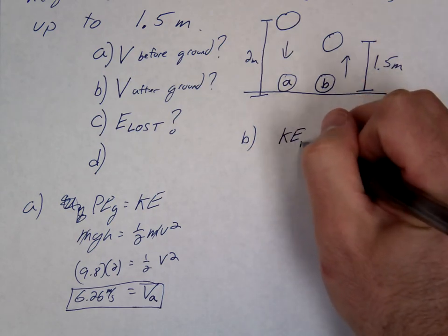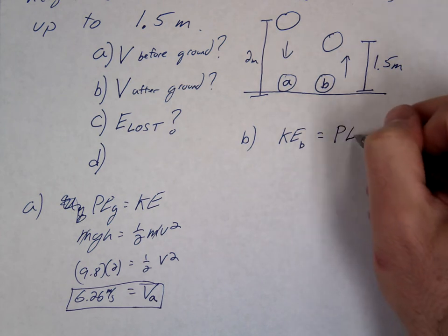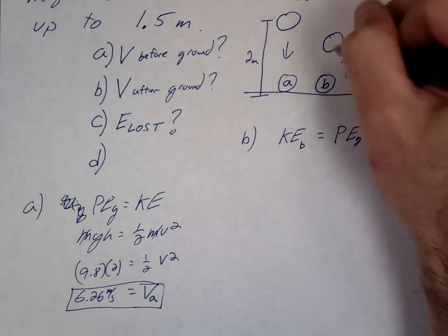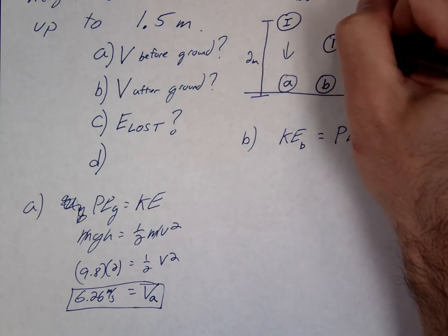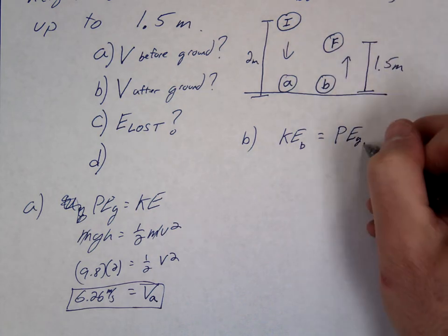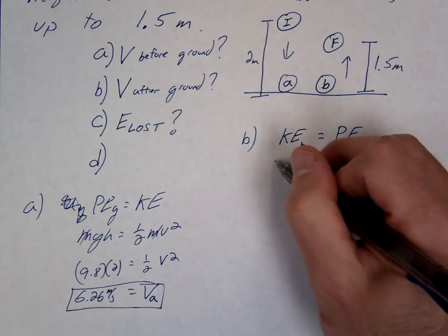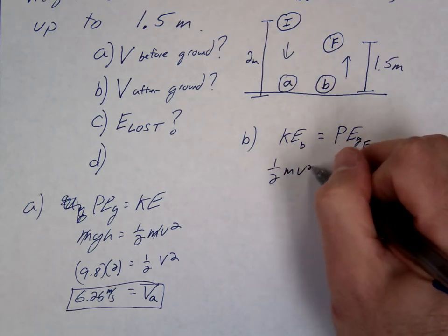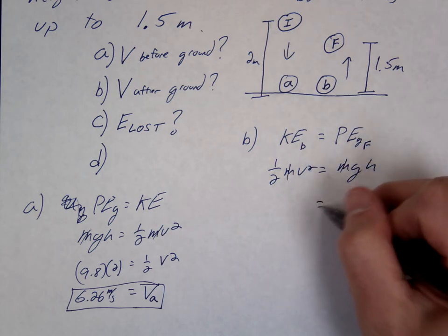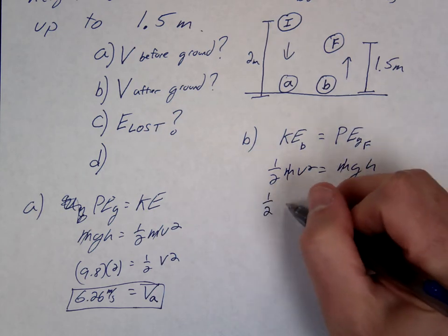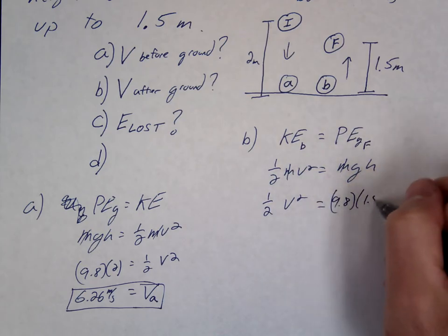So we'd say, alright, the kinetic at point B should equal the potential at the top or here. Maybe we'll call this one the initial I, this one the final F. So what is the potential energy at the final? Alright, so you just do it the same way. Except we use 1.5 for our height.